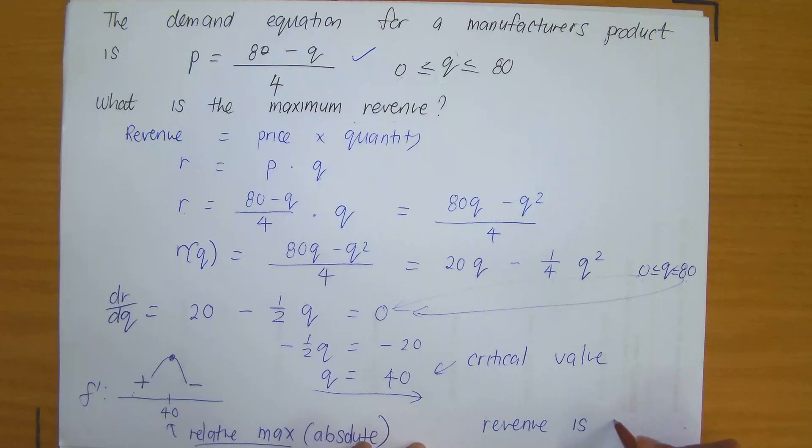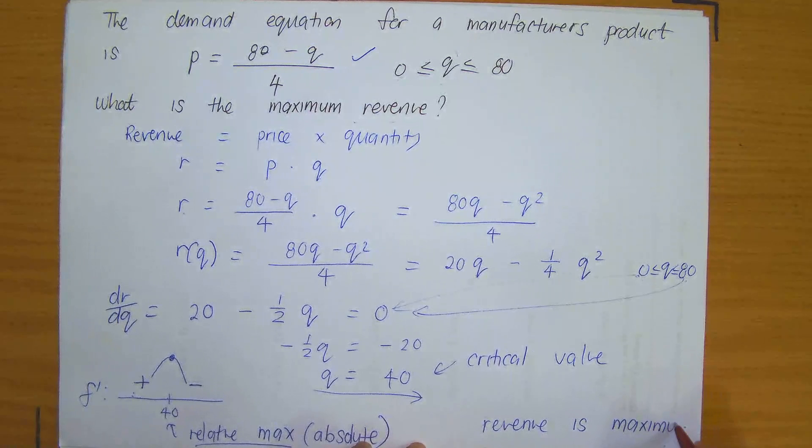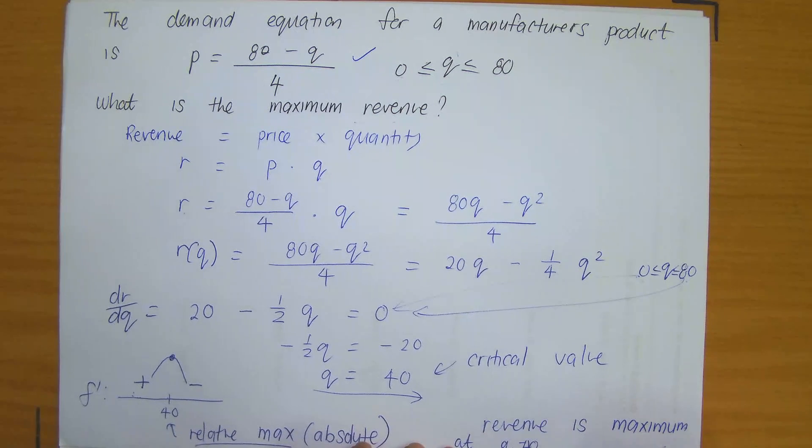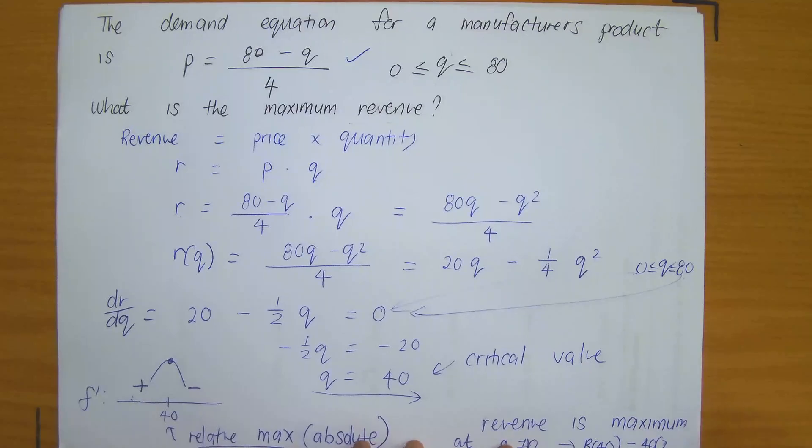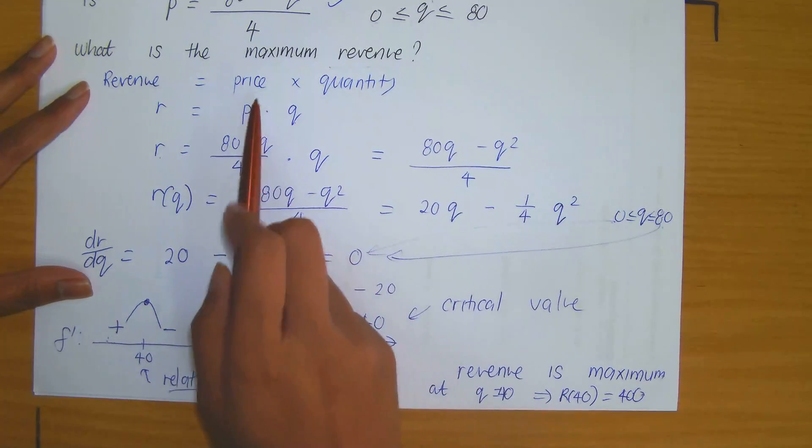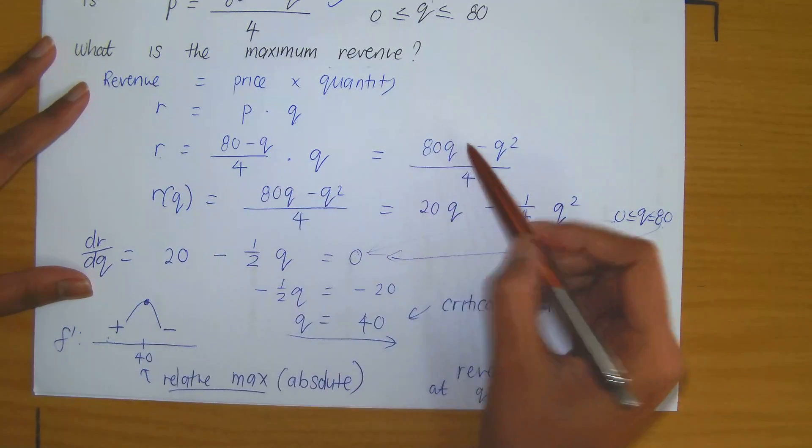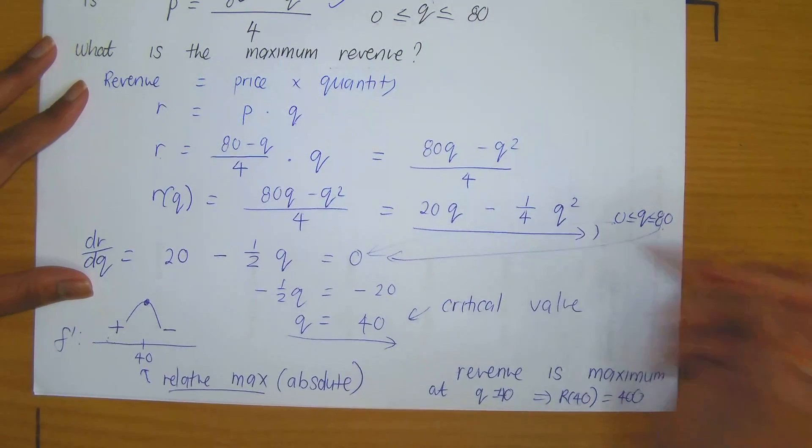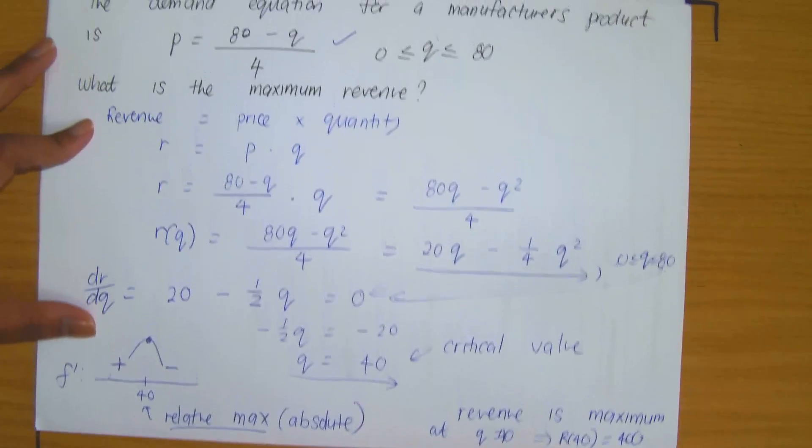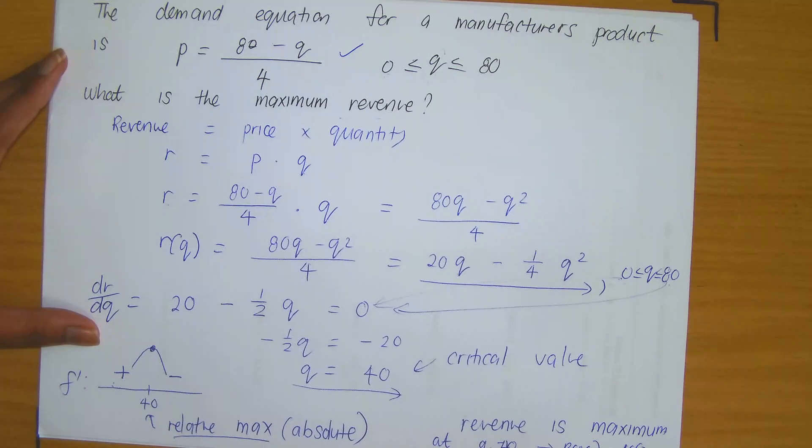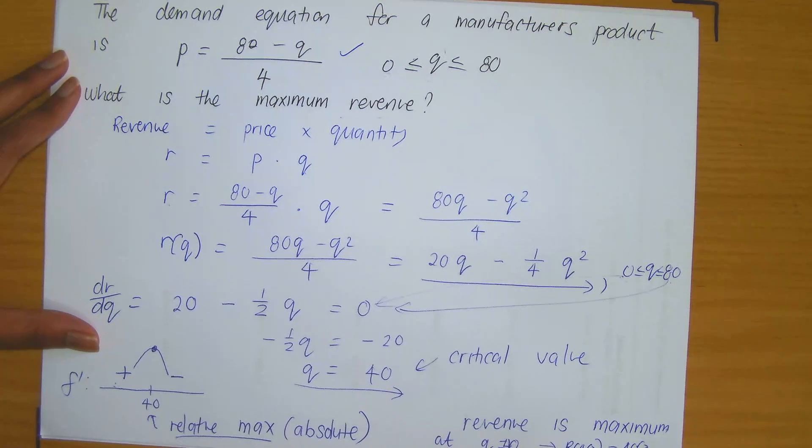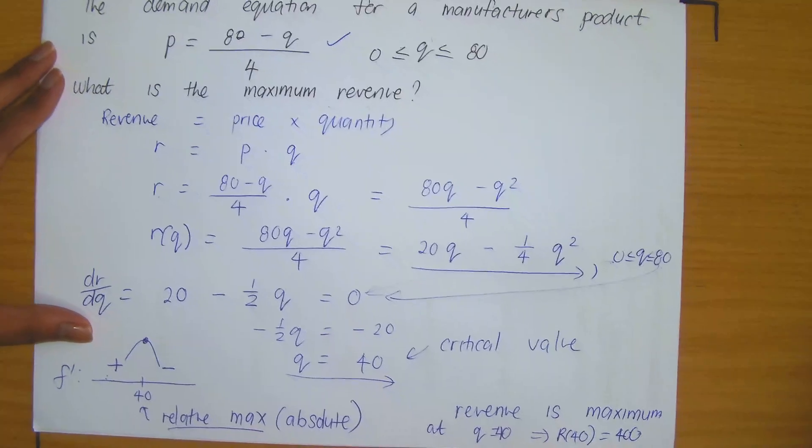The revenue is maximum at Q equals to 40. And what is the revenue at Q equals to 40? Revenue at 40 is 400. So plugging in 40 into your revenue function, which is this function here, you would then observe that the answer is 400. So that is the maximum revenue that this manufacturer would obtain from the sale of his product, which is 400.